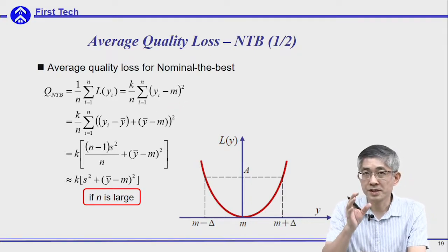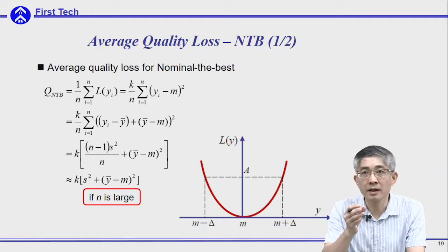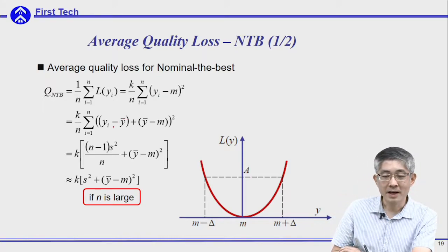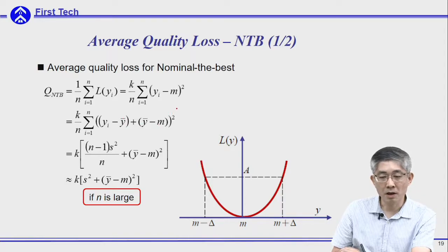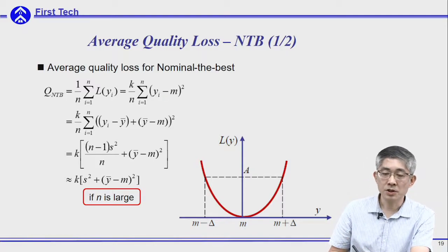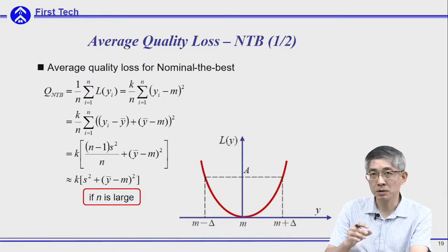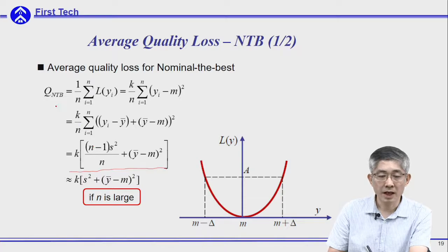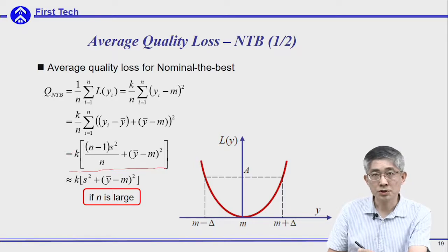We can use some mathematical transformation to better understand the features of this average quality loss for the nominal-the-best problem. We subtract y-bar and add y-bar, where y-bar is the average output of the n samples. Using simple manipulation of the equation and some concepts from statistics, the average loss for the nominal-the-best problem can be expressed in terms of k, the quality coefficient.